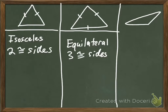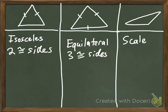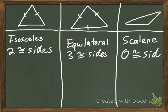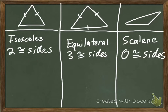So if the first one was isosceles and the middle one was equilateral, the last one has to be scalene. Scalene means there are zero congruent sides — none of the sides are congruent. To recap: isosceles has two congruent sides, equilateral has three congruent sides, and scalene has no congruent sides.